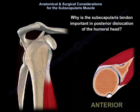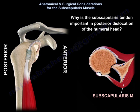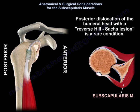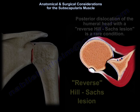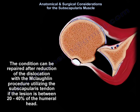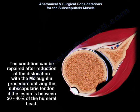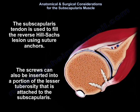Why is the subscapularis tendon important in posterior dislocation of the humeral head? Posterior dislocation with a reverse Hill-Sachs lesion is a rare condition. After reduction, it can be repaired with the McLaughlin procedure utilizing the subscapularis tendon if the lesion involves 20 to 40% of the humeral head. The subscapularis tendon is used to fill the reverse Hill-Sachs lesion using suture anchors, and screws can also be inserted into a portion of the lesser tuberosity attached to the subscapularis.